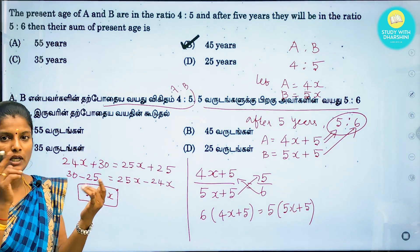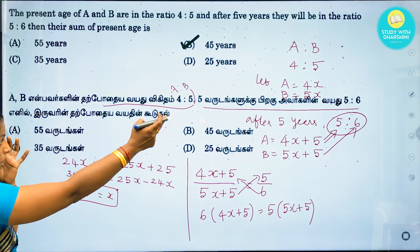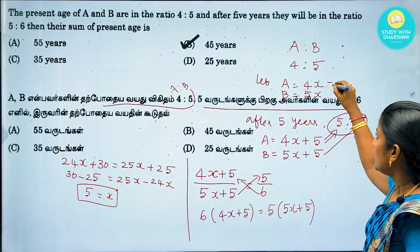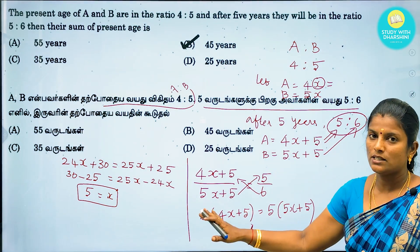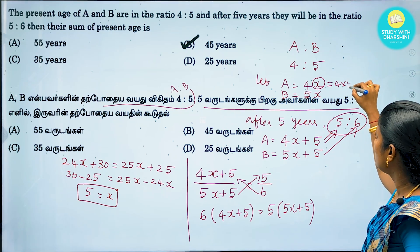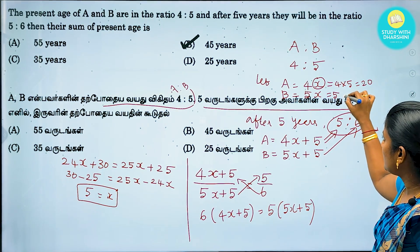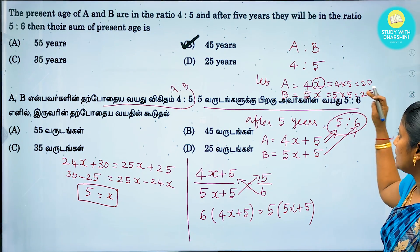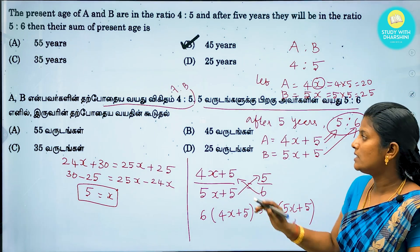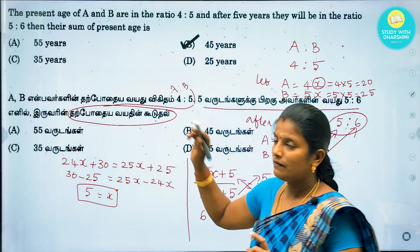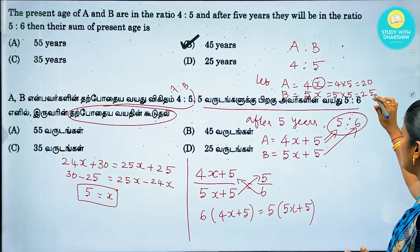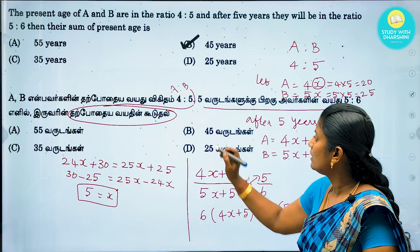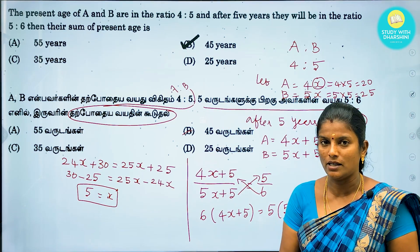Now if I have x equal to 5, I will substitute. So 4x is 4 into 5, which is 20. And 5x is 5 into 5, which is 25. So A is 20 and B is 25. If you want to add them, 20 plus 25 is 45. So the answer is option B: 45.